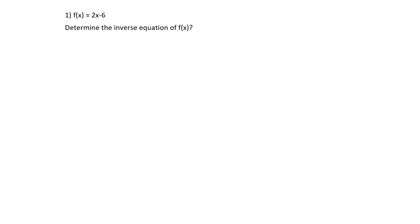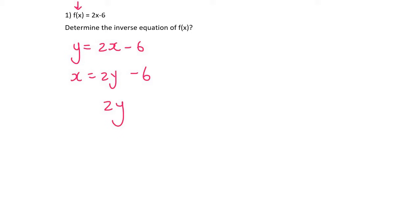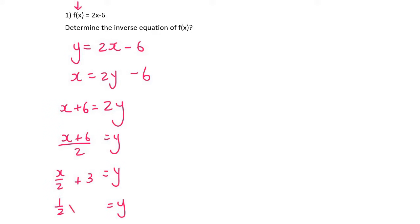Question one: they want us to determine the inverse equation. To determine the inverse equation, you simply switch the x's and y's around. I'm going to rewrite it as y equals 2x minus 6, then switch x and y: x equals 2y minus 6. Then get y alone — move the 6 over and divide by 2. So it's x over 2 plus 3, or equivalently a half x plus 3.